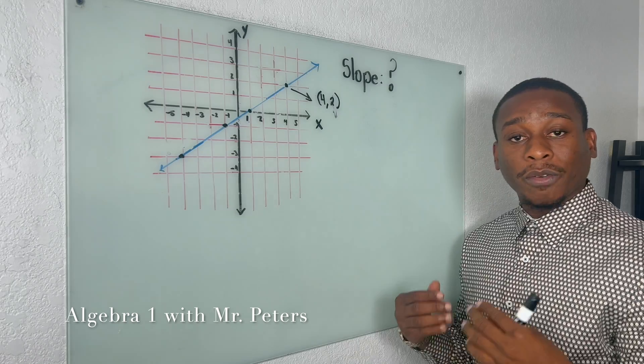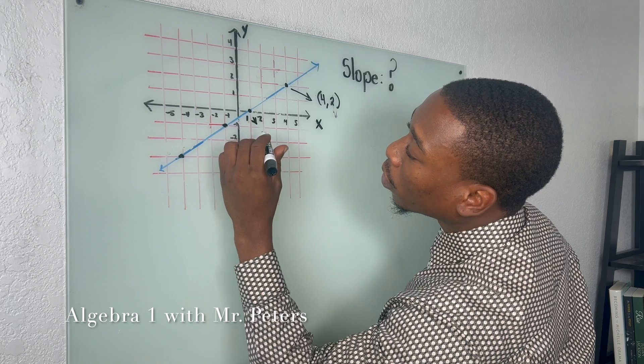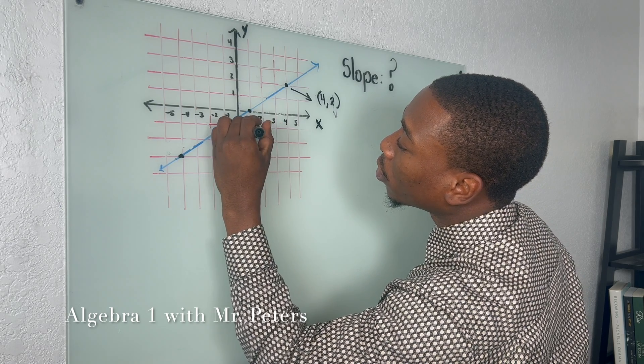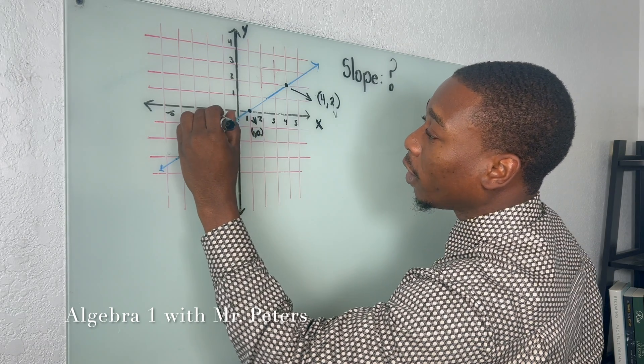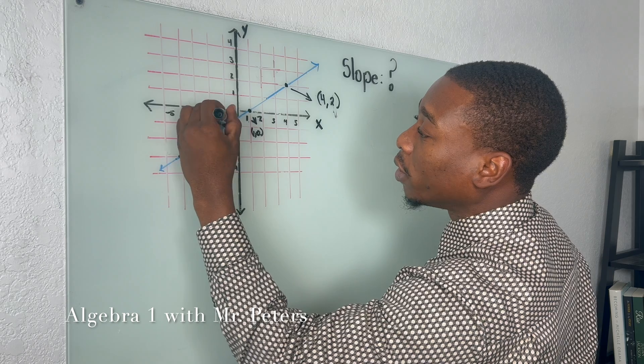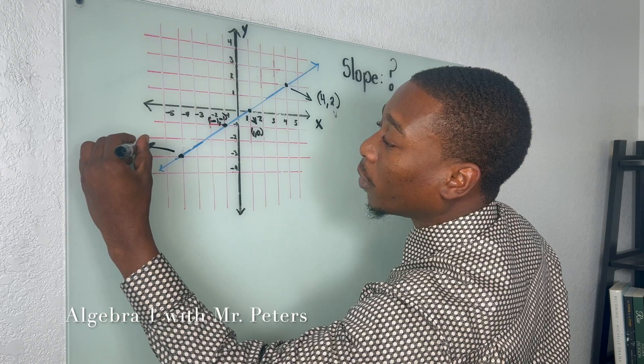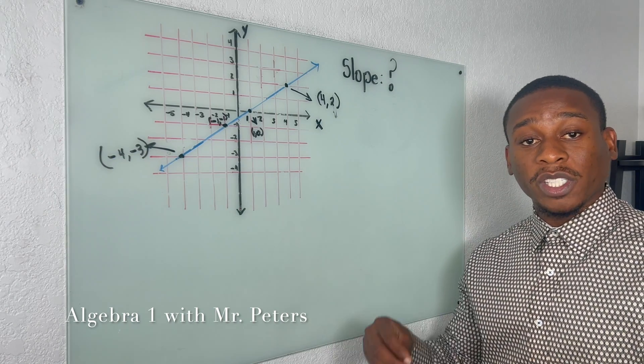The reason why we can use these points is because we're going to have an exact X and an exact Y, and that's what we need when it comes to finding the slope. So we have (4, 2), we have (1, 0), we have (-1, -1), and then we have (-4, -3).